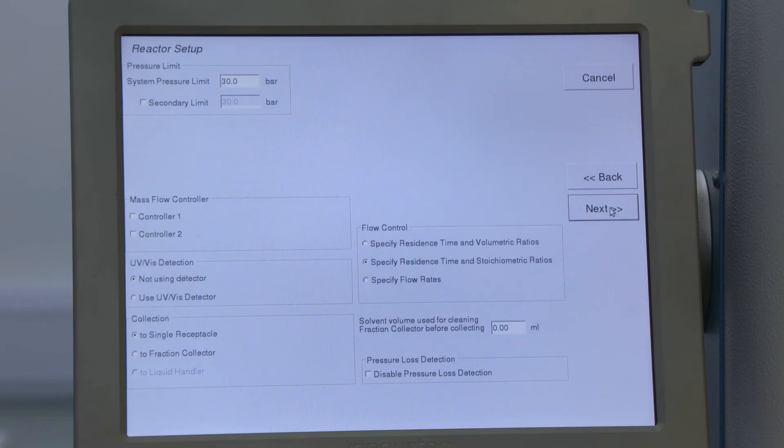On this screen I get to set up some other parameters like the maximum pressure that the system's allowed to reach, whether or not I'm using any auxiliary equipment, and how I want the system to be controlled by the volumetric ratios, stoichiometric ratios, and residence time.